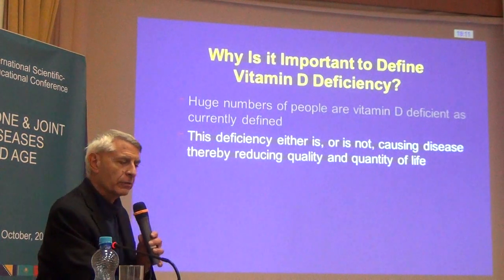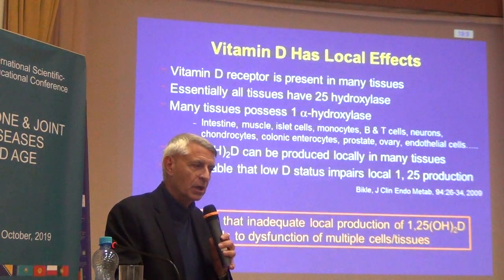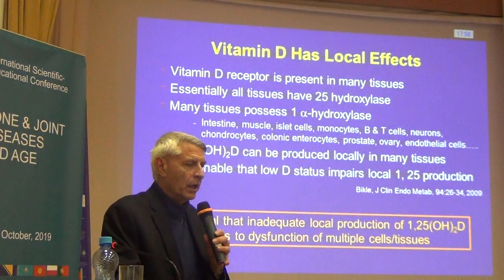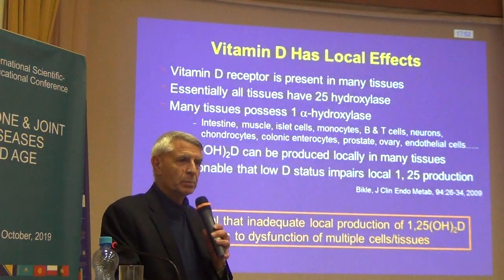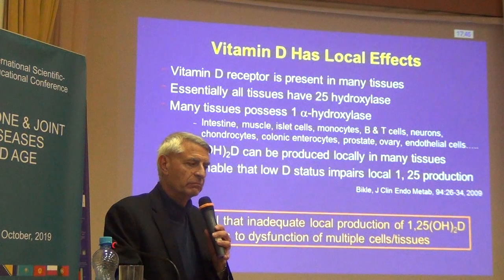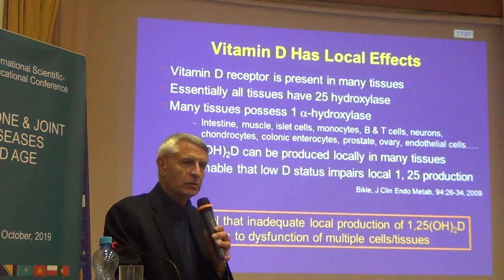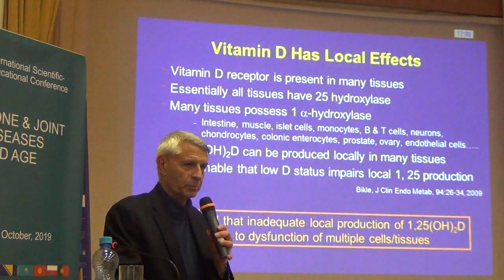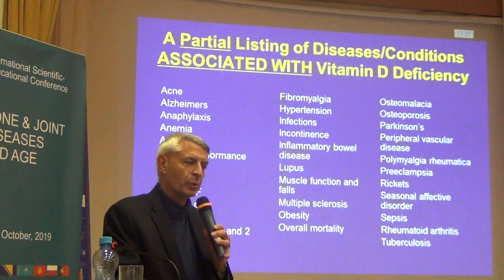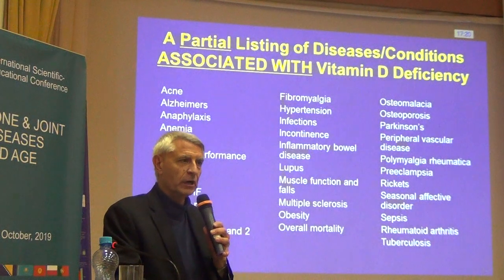The 'so what' is that this deficiency either is or is not causing lots of disease. It could be causing disease because vitamin D has local effects — most of our tissues possess the 1-alpha-hydroxylase to create active vitamin D. So it's logical that insufficient vitamin D could lead to dysfunction of multiple tissues, multiple cells, and therefore multiple diseases. It's unsurprising that vitamin D deficiency has been associated with virtually every human disease.